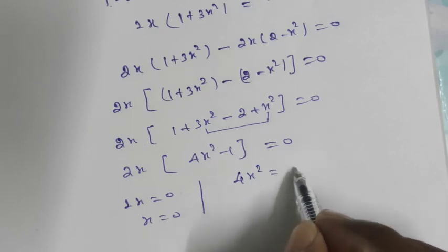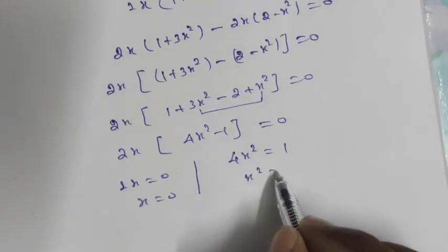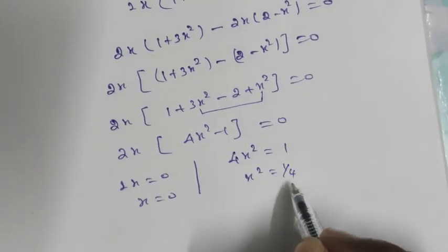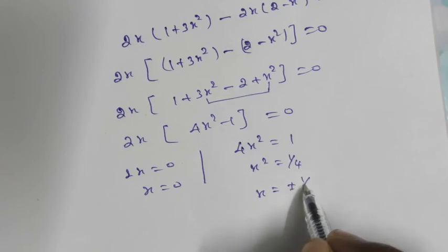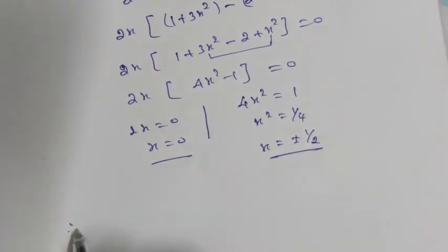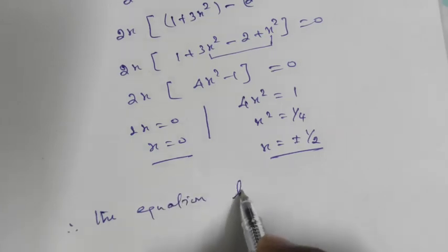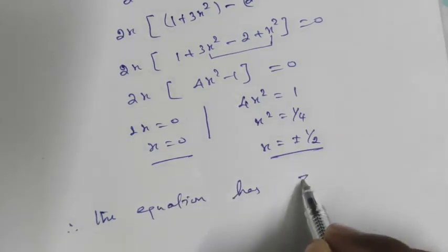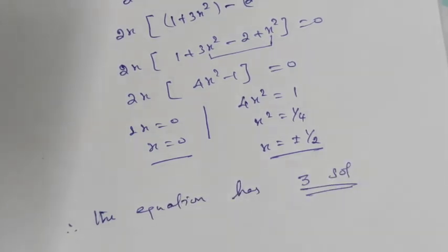From 4x squared equals 1, we get x squared equals 1 over 4, so x equals plus or minus 1 divided by 2. Therefore the equation has 3 solutions: x equals 0, x equals plus 1/2, and x equals minus 1/2.